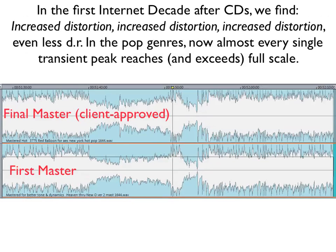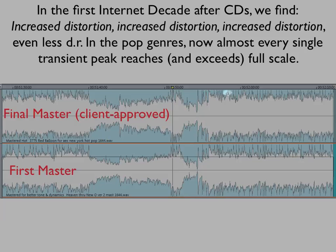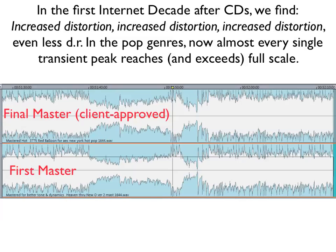In the first internet decade, after CDs began to wane, we find even more distortion, far greater distortion, and even less dynamic range. In the pop genres, almost every single transient peak reaches full scale — we have both positive and negative peaks, and you can see peak after peak after peak. You can imagine what kind of distortion there must be in a recording to achieve this completely artificial situation. I'm not going to let you imagine what it might sound like — I want you to hear the loudest master that I've ever had to produce.